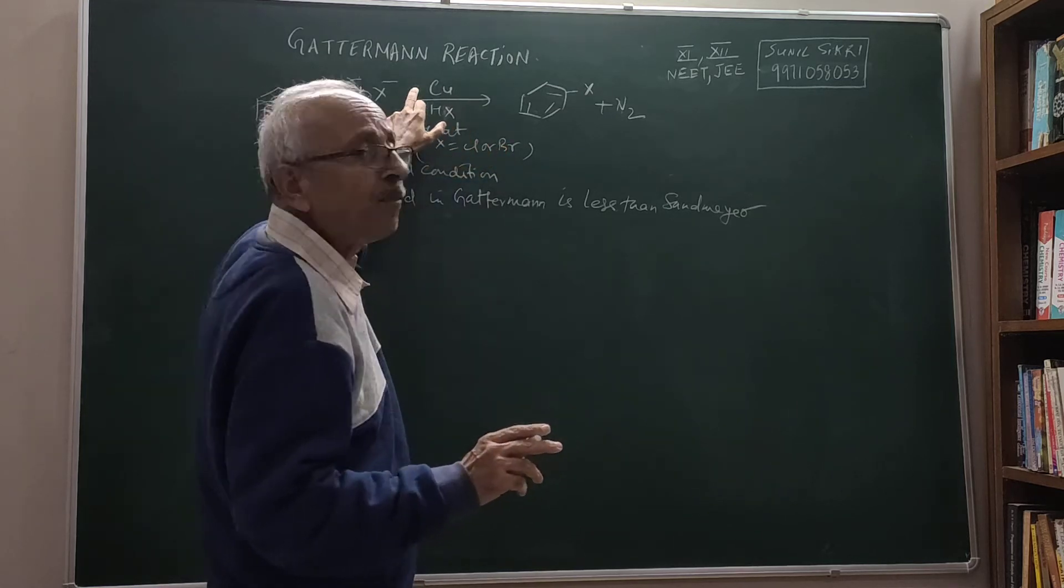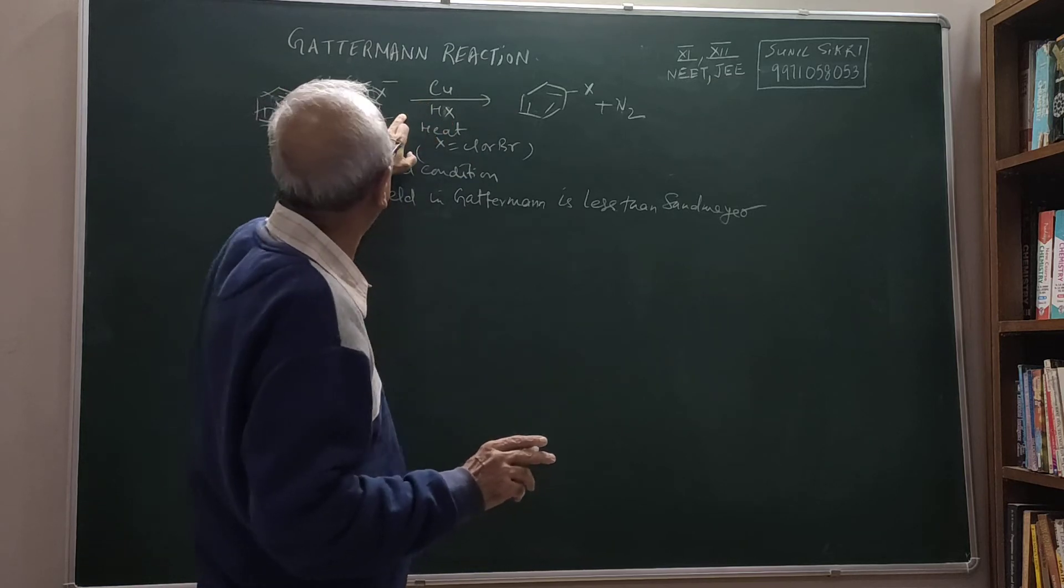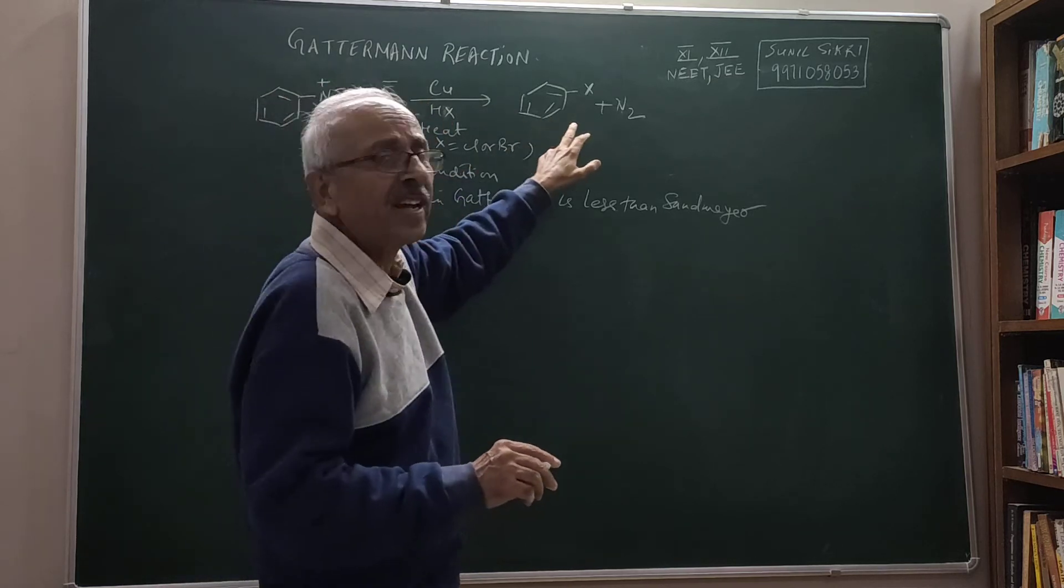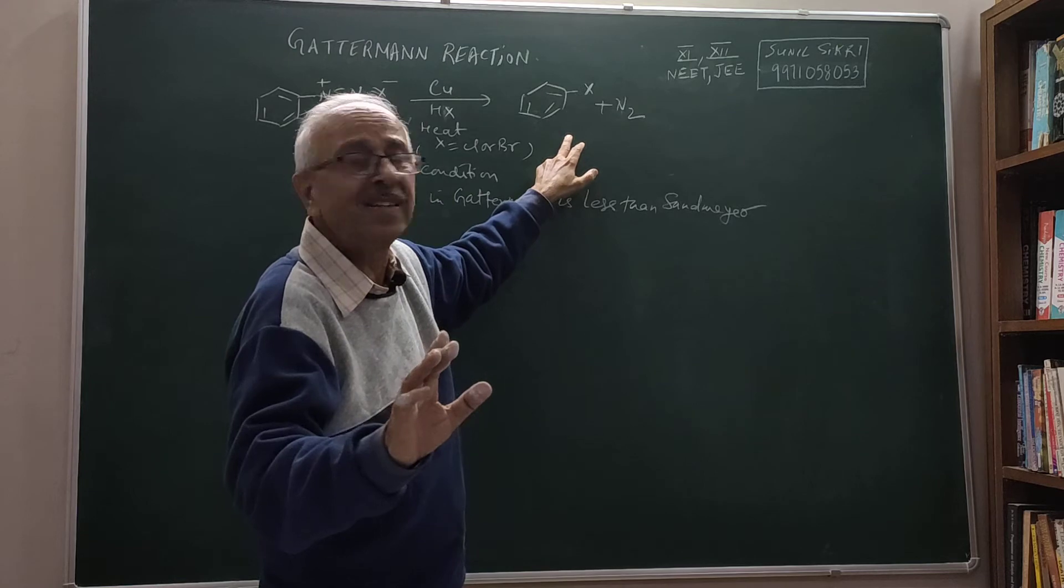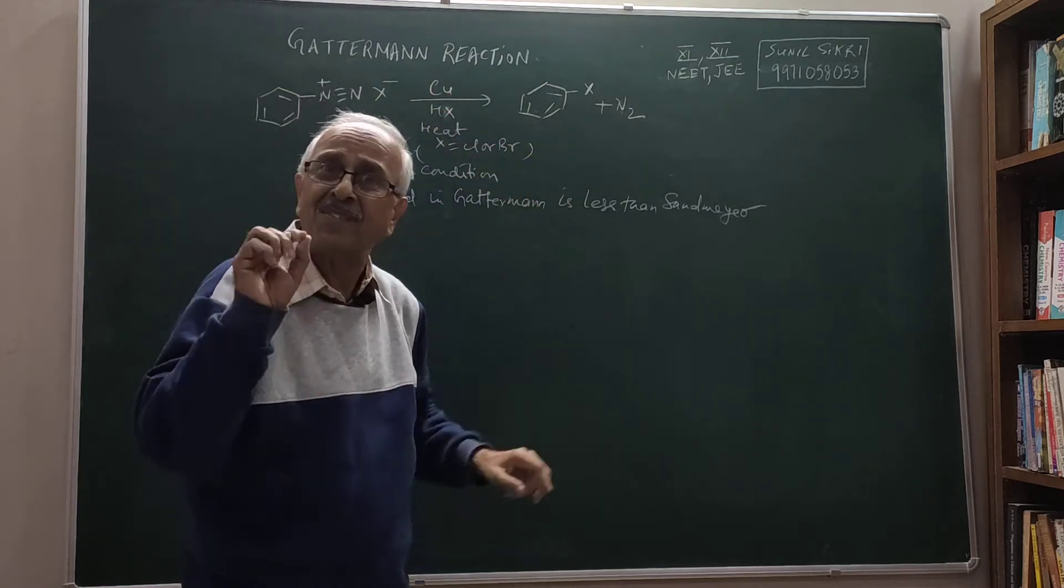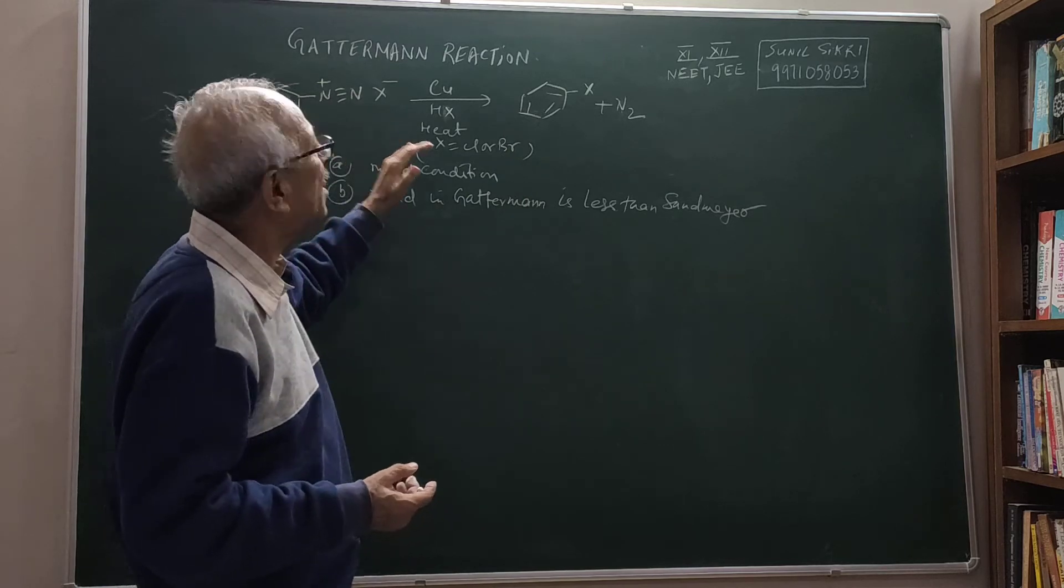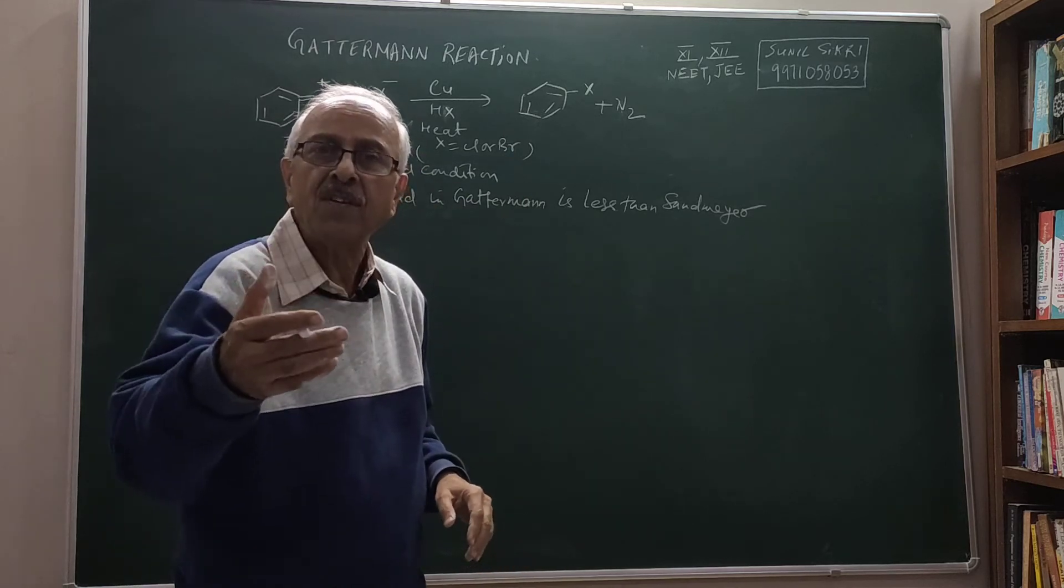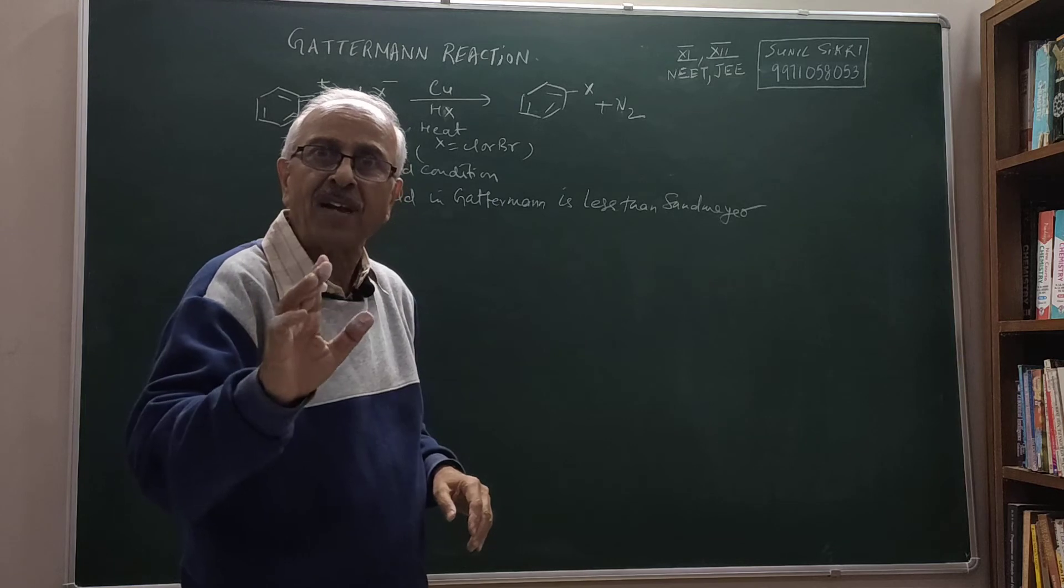Here I am using copper powder and hydrogen halide acid. So the result is again chlorobenzene or bromobenzene. There is not much difference, only copper powder difference is there. And it can be said that Gatterman reaction is a modification of Sandmeyer reaction.